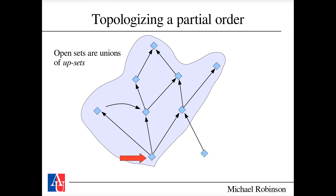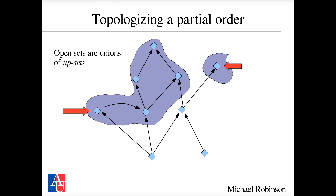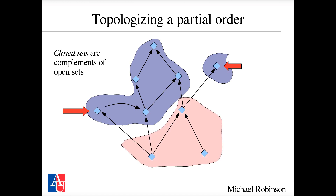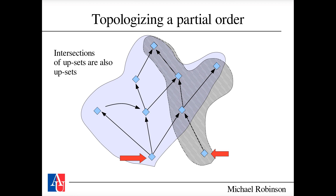An open set in the Alexandrov topology is built from unions of upsets — all elements going up from a particular element. If you mark an element in red and follow it all the way up in the partial order, that forms an open set. A union of two such upsets is also an open set. Closed sets are the complements — roughly the down-sets.